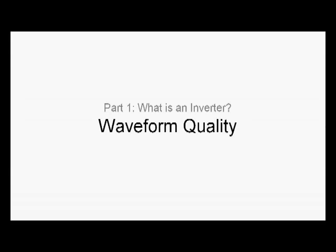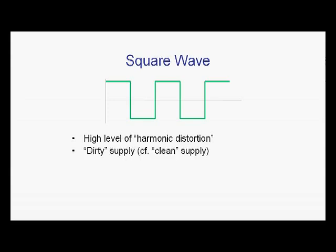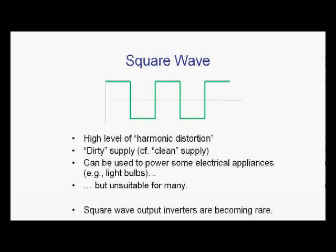So let's wrap up part one by talking about waveform quality for a couple of minutes. What we've seen so far are square waves. Now the problem with a square wave is that it has a high level of harmonic distortion. Without getting into too much detail on that, it's basically a dirty supply compared to what we'd like to have - generally speaking, a clean supply. Now a square wave can be used to power some electrical appliances - light bulbs would be fine with it, for example - but it's completely unsuitable for many, and there are things it would actually damage. Square wave output inverters are actually becoming quite rare.